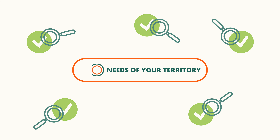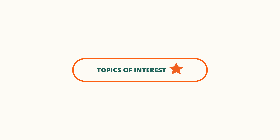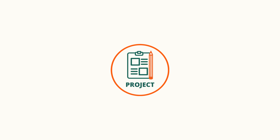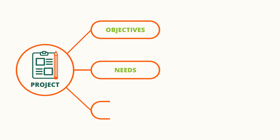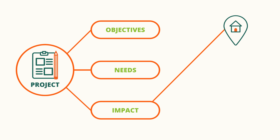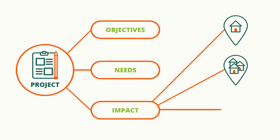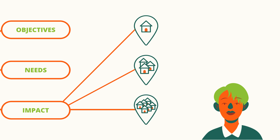Once you find a topic, you can start reflecting about the kind of project you want to create. Think about the objectives, the needs, and which kind of impact you want to create at the local, national, and European levels. This reflection will help you to set the basis of your project.